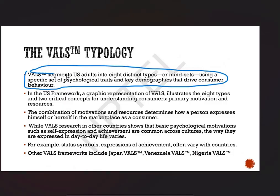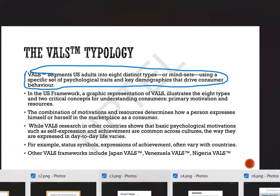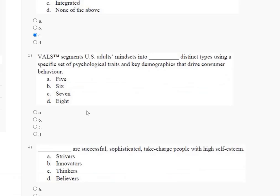VALS segments US adults into eight distinct types using a specific set of psychological traits and key demographics that drive consumer behavior. So the correct answer for question number three is option D — eight.